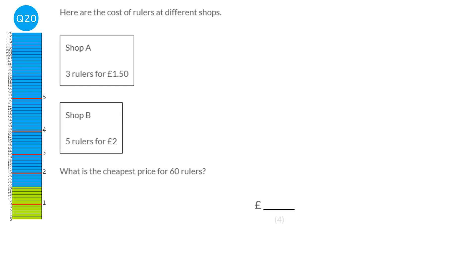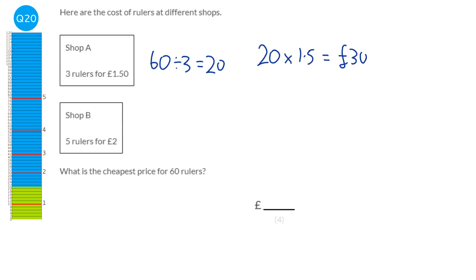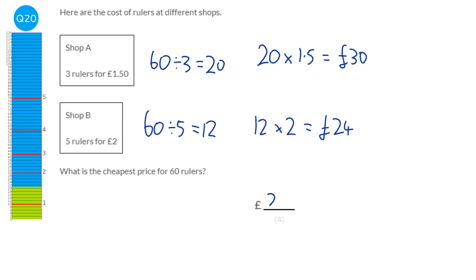For shop A, they're selling rulers in lots of 3. We do 60 divided by 3 to find how many lots we have, which is 20. One bundle costs £1.50, so 20 times £1.50 is £30. For shop B, bundles are 5 rulers. 60 divided by 5 is 12 bundles at £2 each, giving £24. So the cheapest price is at shop B at £24.